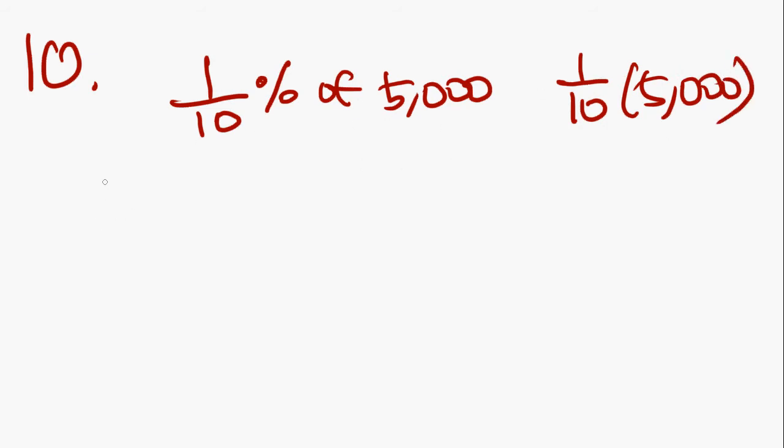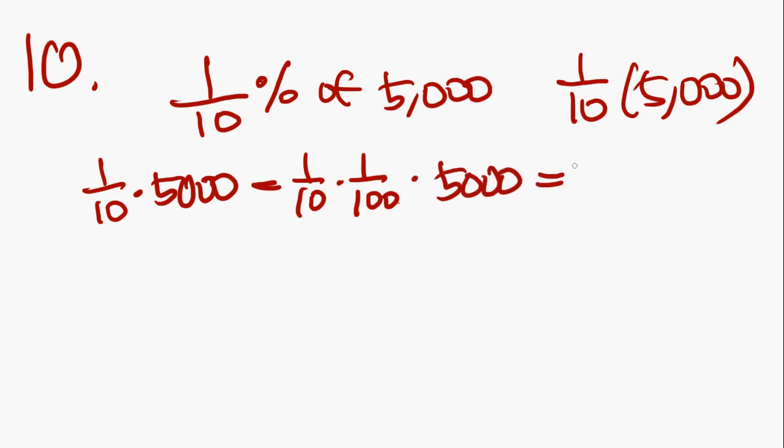Question 10 says, when 1 tenth percent of 5,000 is subtracted from 1 tenth of 5,000, what's the difference? Okay. So, let me rewrite this. What it's saying is 1 tenth times 5,000 minus 1 tenth percent, which is 1 tenth times 1 over 100, of 5,000 equals what? Perfect. As long as you can translate those words into an equation, I think you're going to be set.